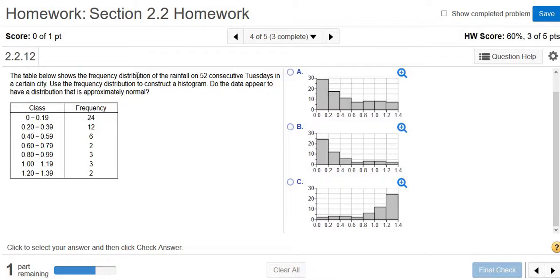The table below shows the frequency distribution of the rainfall on 52 consecutive Tuesdays in a certain city. Use the frequency distribution to construct a histogram, and we want to know if it's approximately normal.